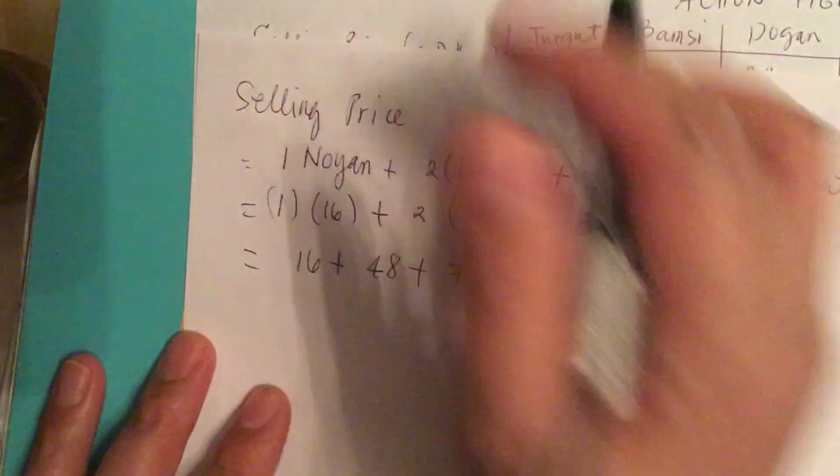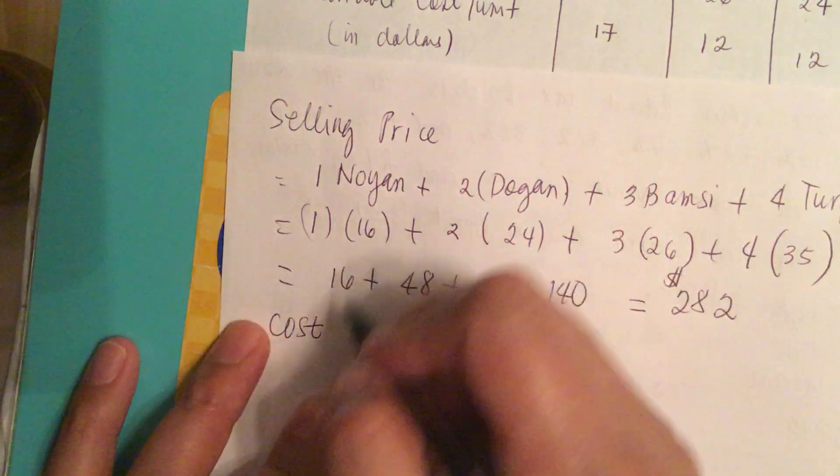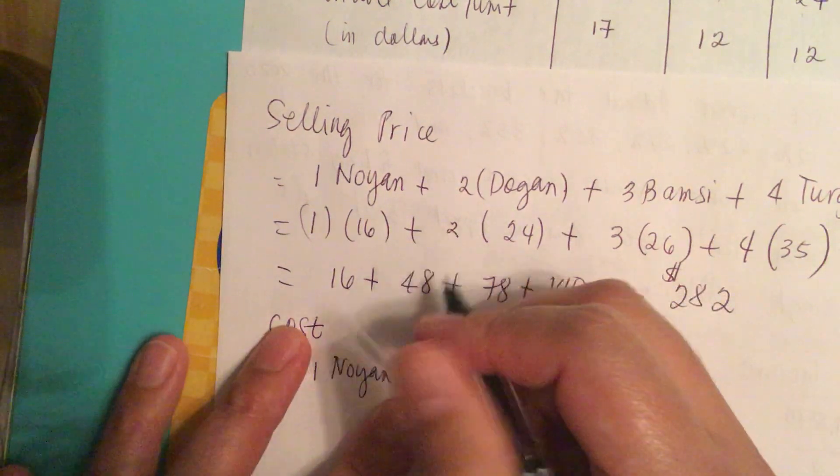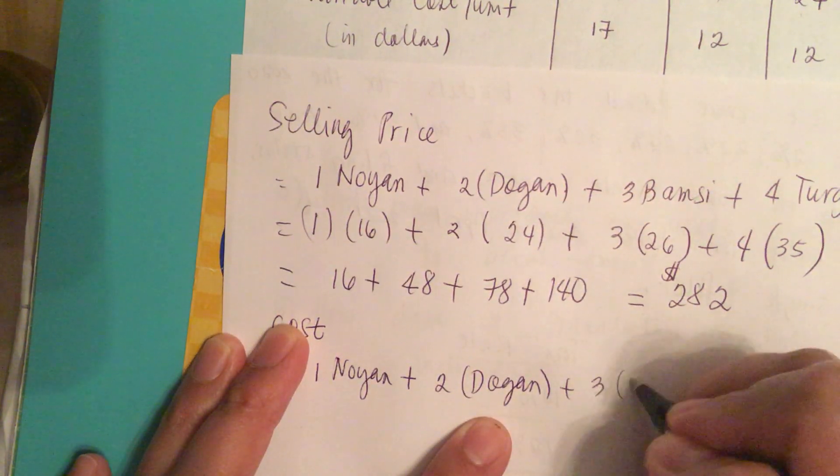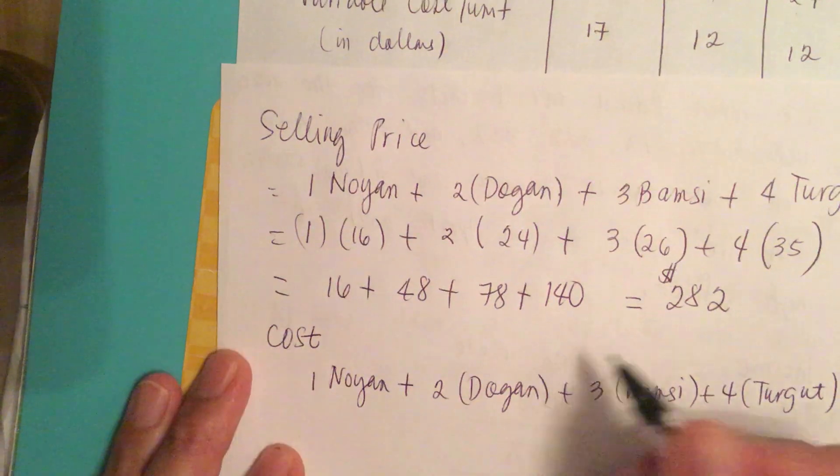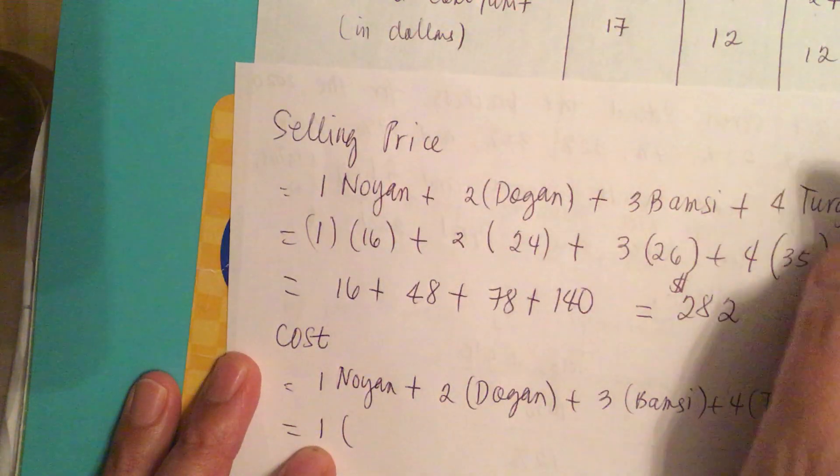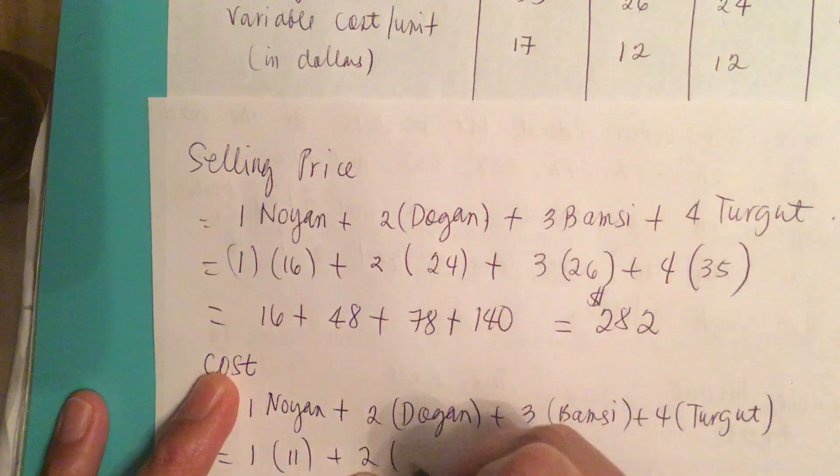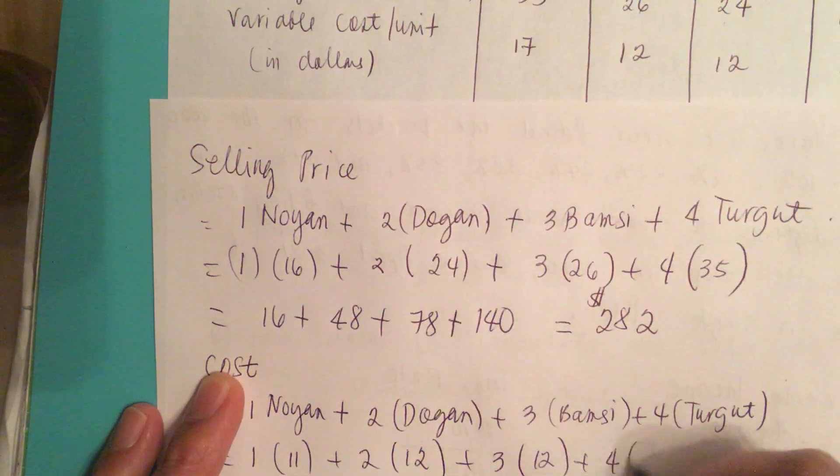So now let's work on the cost. So 1 Noyan plus 2 Dogan plus 3 Bamsi plus 4 Turgut. So this is equal to 1 times the cost for Noyan is $11, plus 2 times Dogan is 12, plus 3 times Bamsi which is 12, plus 4 times Turgut 17.